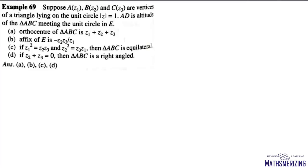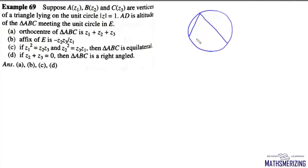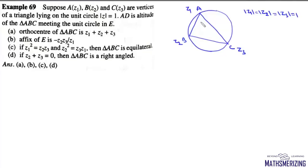Let ABC be vertices of a triangle lying on a unit circle |Z| = 1, and AD is the altitude of triangle ABC meeting the unit circle at E. We have this unit circle with center at the origin, and triangle ABC whose vertices are Z1, Z2, and Z3, where |Z1| = |Z2| = |Z3| = 1. AD is the altitude of this triangle and it meets the unit circle at E.